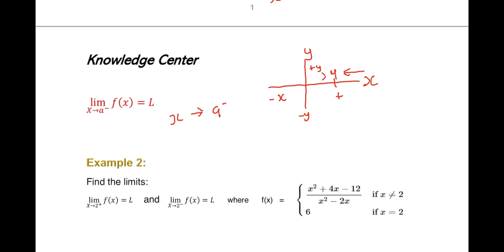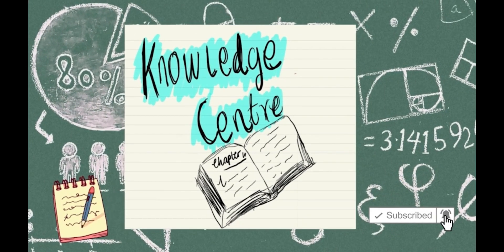A function has a finite limit at x equal to a if and only if both the left-sided and the right-sided limits are equal and finite. If the limit exists, it is equal to the common value of the one-sided limits.